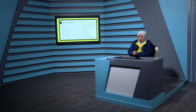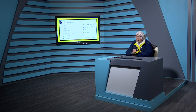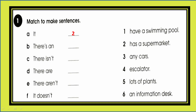Now we move to the activity book. Exercise one: match to make sentences. A — 'it has a supermarket'. B — 'there is an escalator'. C — 'there isn't an information desk'. D — 'there are lots of plants'. E — 'there aren't any cars'. F — 'it doesn't have a swimming pool'.